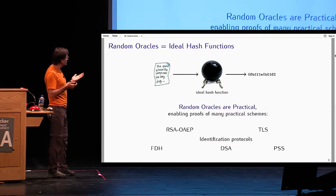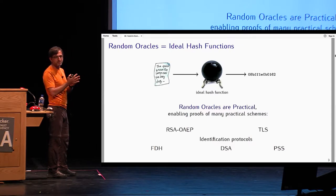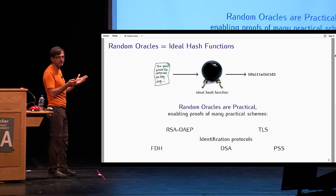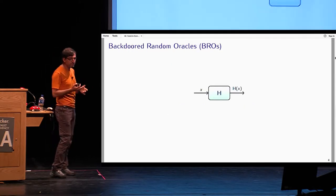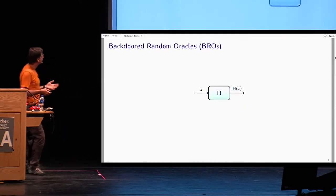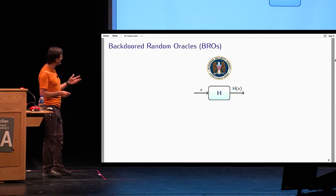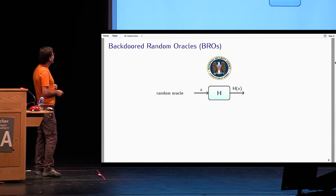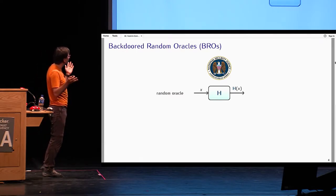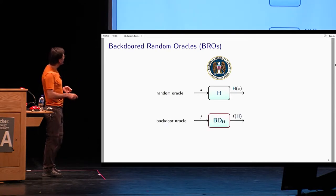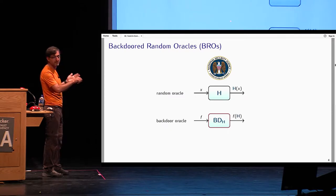What we want to do in this paper is apply this random oracle methodology to analyze the security of hash functions in a setting where they might have some weaknesses or backdoors built into them. We introduce a new security model called backdoor random oracles, or BROS, where we have a big brother who has designed a good-looking hash function which behaves randomly on various inputs. However, for his own interest, the big brother might have a backdoor oracle which takes any arbitrary leakage function f and outputs a function of the function table of the random oracle.